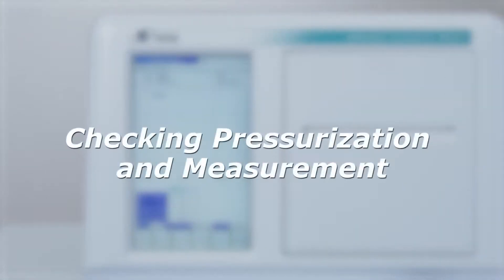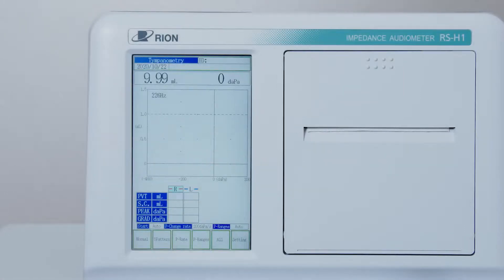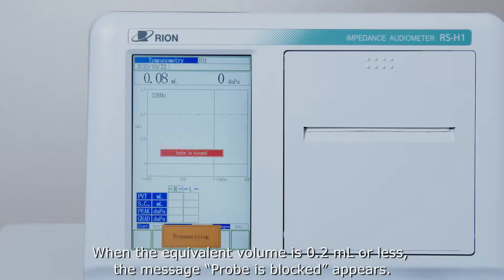Checking pressurization and measurement. Block check. When the equivalent volume is 0.2 milliliters or less, the message probe is blocked appears.